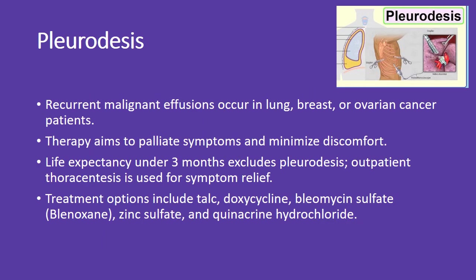Pleurodesis is indicated for recurrent malignant effusions occurring in lung, breast, or ovarian cancer patients. Therapy aims to palliate symptoms and minimize discomfort. Life expectancy under 3 months excludes pleurodesis. Outpatient thoracentesis is used for symptom relief. Treatment options include talc, doxycycline, bleomycin sulfate (Blenoxane), zinc sulfate, and quinacrine hydrochloride.